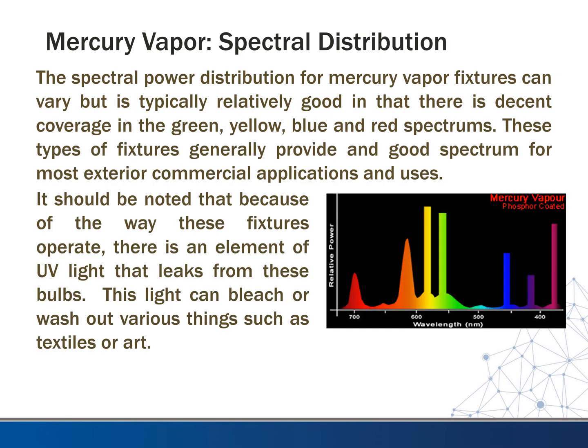The spectral power distribution for mercury vapor fixtures can vary, but it's typically relatively good in that there is decent coverage in the green, yellow, blue, and red spectrums. These types of fixtures generally provide a good spectrum for most exterior commercial applications. It should be noted that because of the way these fixtures operate, there is an element of UV light that can leak from the bulbs, so you don't want to use these when there are any textiles or art involved. Here you can see in this spectrum you have pretty much some representation in almost all the color bands — maybe light blue and the red spectrum are a little off, but for the most part it's pretty good coverage.